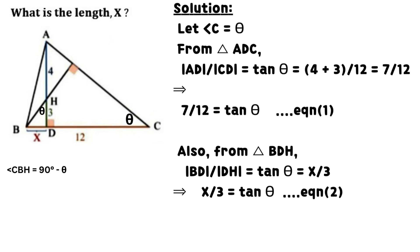Also, from triangle BDH, line BD divided by line DH equals tan theta, which equals x divided by 3.